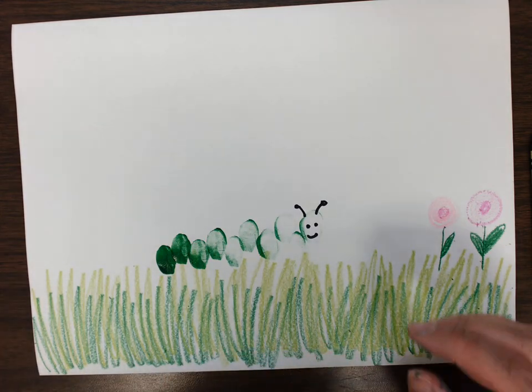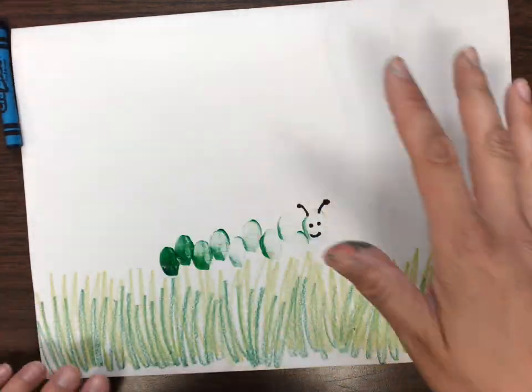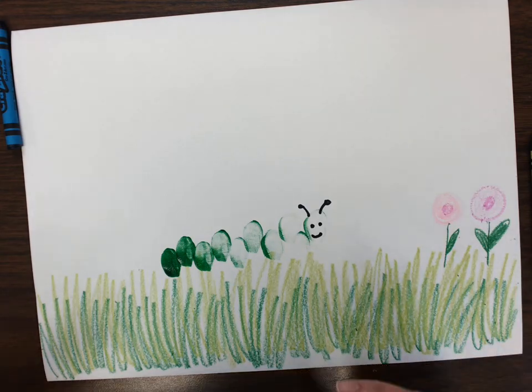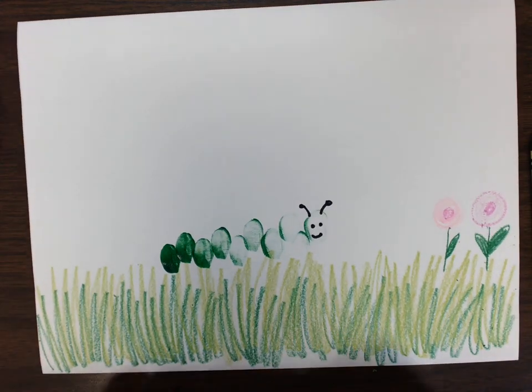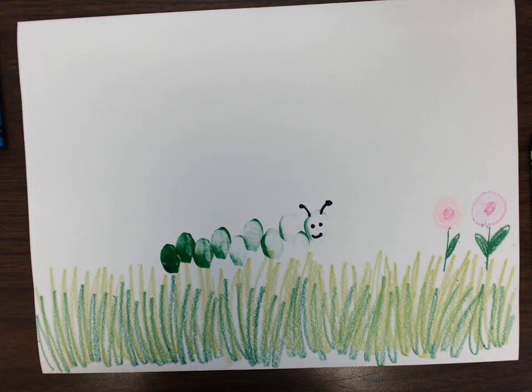And then I can add anything else that I want to my picture. I can put a sky and leaves and trees and flowers and anything else that I want. That's the plan. Very cool value caterpillar.